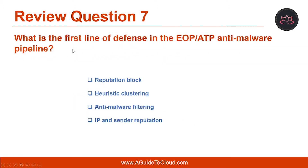Question number seven. What is the first line of defense in the EOP, which is Exchange Online Protection and Advanced Threat Protection Anti-Malware Pipeline? The correct answer is IP and Sender Reputation.